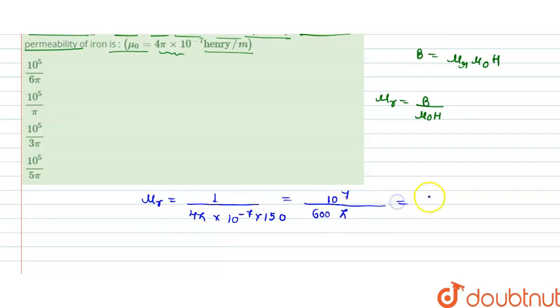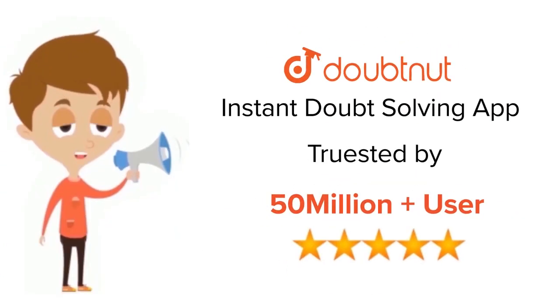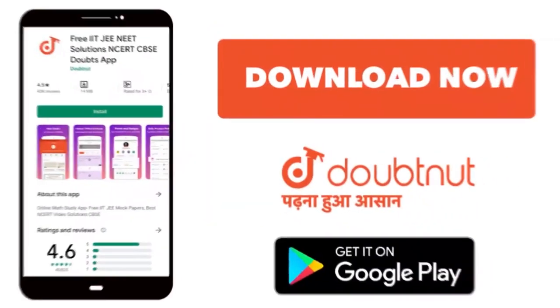That equals 10⁵ / (6π). So we find that μᵣ = 10⁵ / (6π), which means option first is correct. This is the permeability of iron. Thank you for watching. For class 6 to 12, IIT, JEE, and NEET level, trusted by more than 5 crore students, download Doubtnet app today.